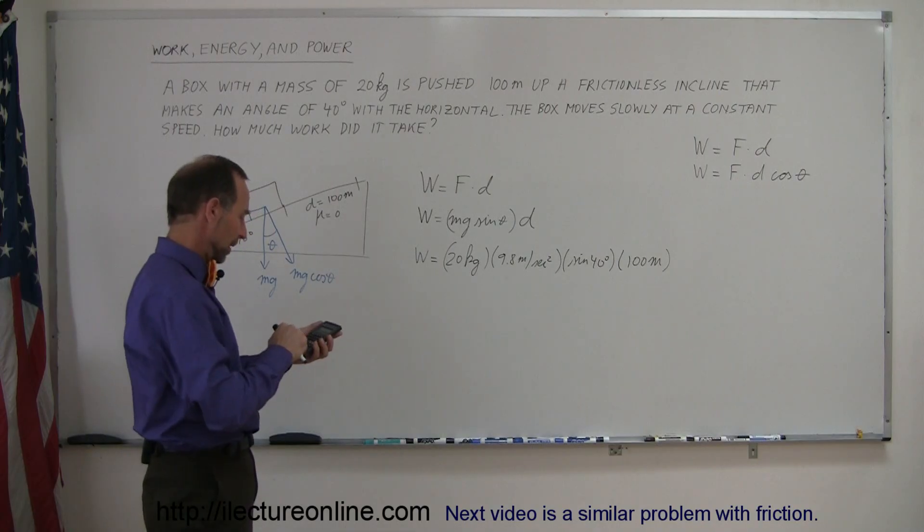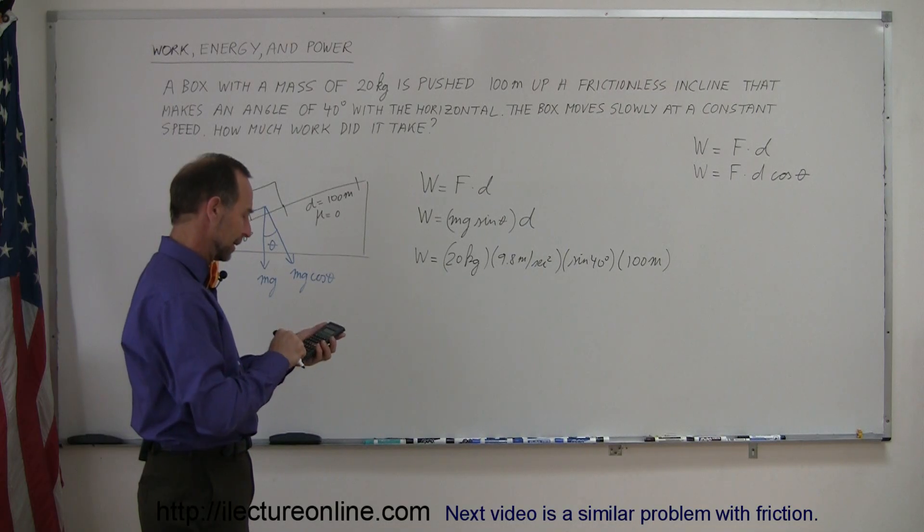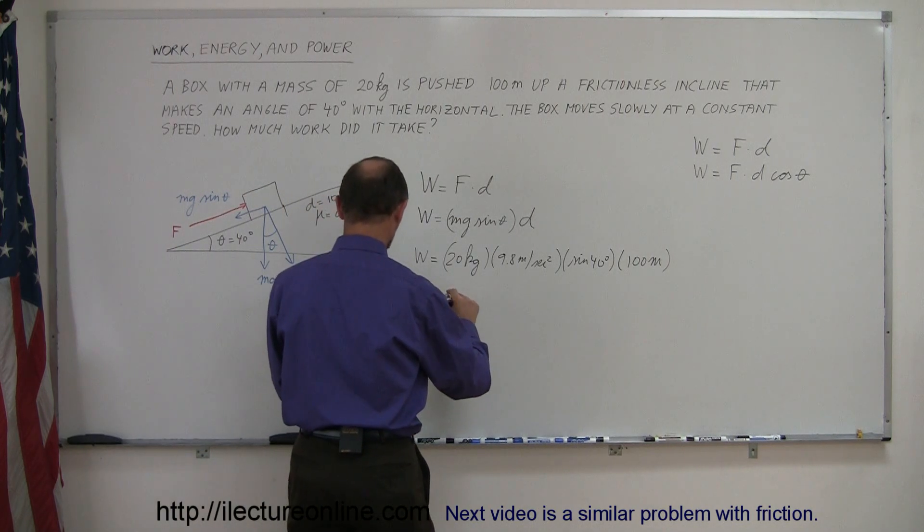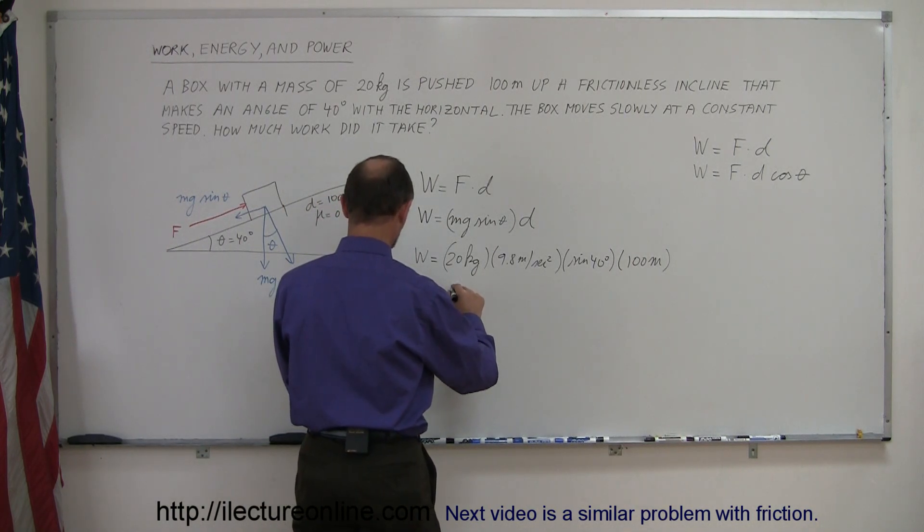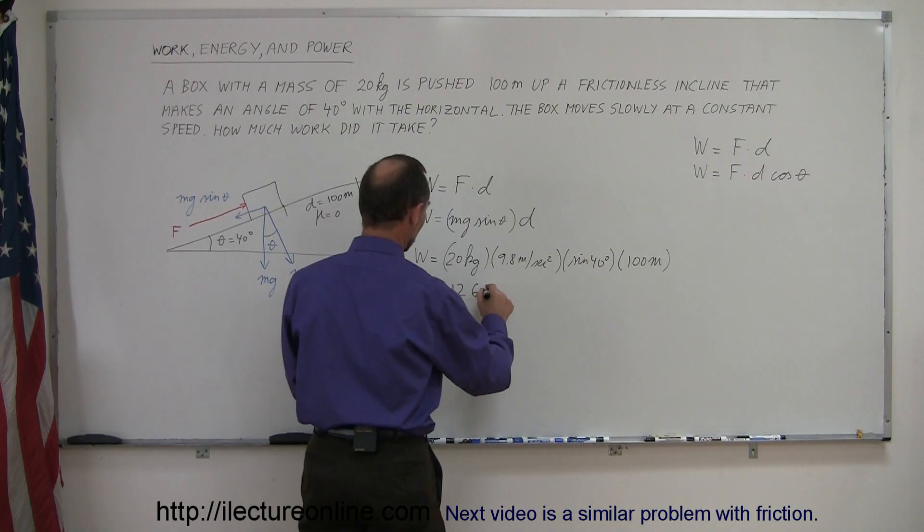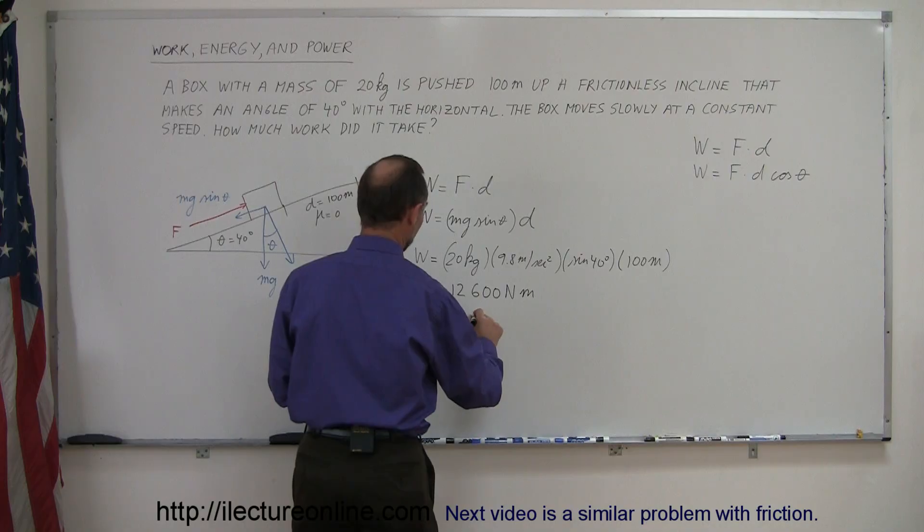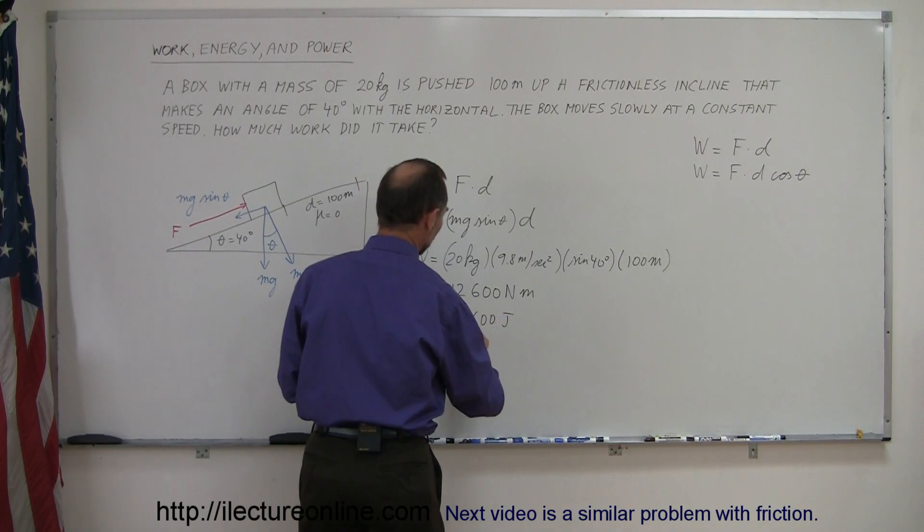So we have 20 times 9.8 times the sine of 40 times 100. That gives us work done equals 12,600 newton meters, or 12,600 joules.